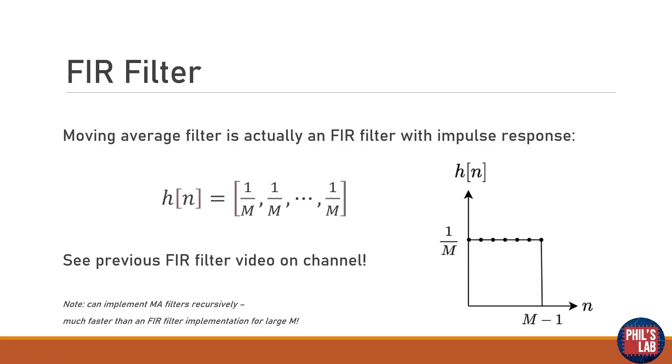It turns out that the moving average filter is simply an FIR filter with a certain impulse response. This impulse response is effectively a pulse as shown here, and at every sample of this impulse response we have a value of 1 over m, and effectively the area of this pulse is then equal to 1. For more information on FIR filters you can check out a previous video I did on my channel. As an additional note, we can actually implement moving average filters recursively which is much faster than an FIR implementation, especially for large values of m. But we won't look at that in this video.